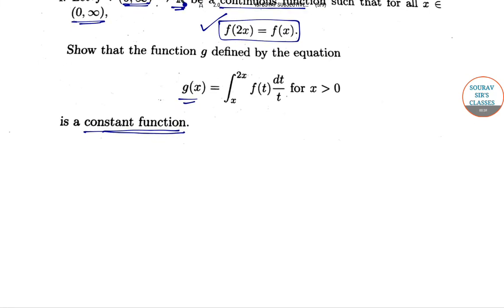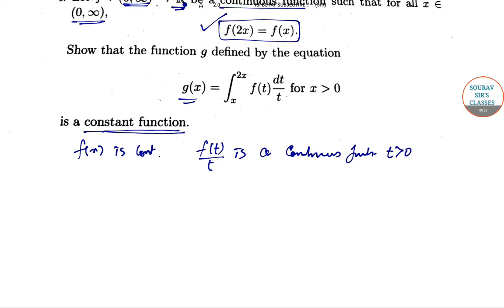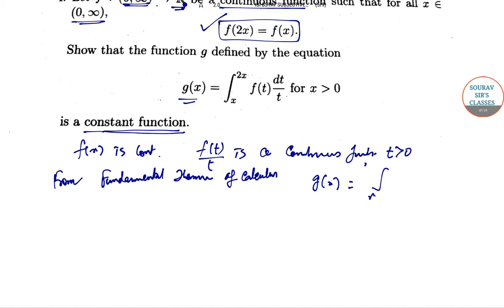Since f(x) is continuous, f(t)/t is a continuous function as well. Since f(t) is greater than 0, we can apply the fundamental theorem of calculus. By the fundamental theorem of calculus, the function g(x) = ∫[x to 2x] f(t)/t dt is a differentiable function.